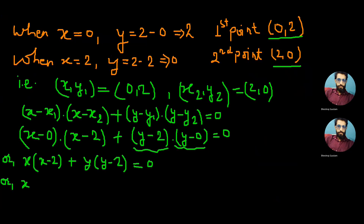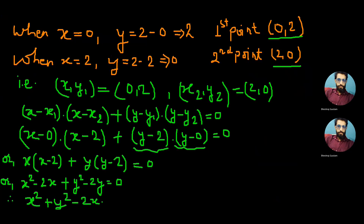Breaking the brackets we get x² − 2x + y² − 2y = 0. Therefore the equation of the required circle is x² + y² − 2x − 2y = 0. This is all for today's question. Thank you for watching. Please share the content and channel.